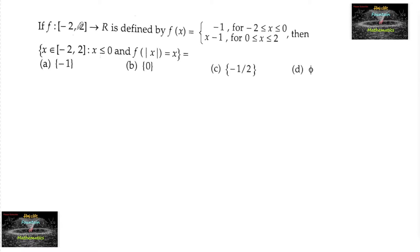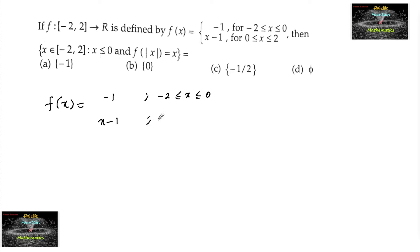If f from closed interval to R is defined by f(x) = -1 for -2 ≤ x ≤ 0, and f(x) = x - 1 for 0 < x ≤ 2. Then for x belonging to [-2, 2] such that x ≤ 0 and f(|x|) = x, find the value of x.